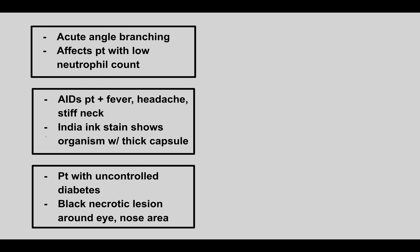The next condition: we see acute angle branching and it affects patients with a low neutrophil count. So this is Aspergillus. Aspergillus likes to affect patients that have neutropenia.